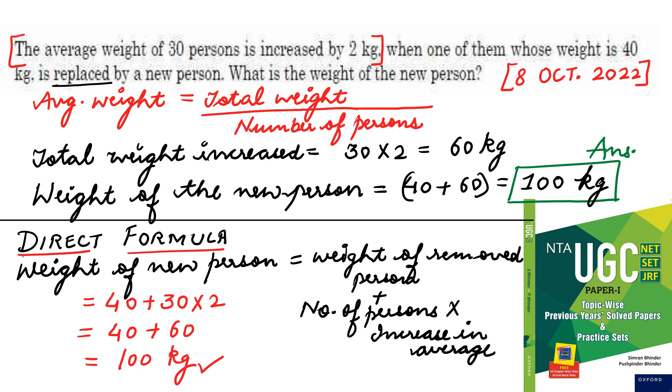Next, try to understand. Weight of the new person, how will it come? Weight of the new person is equal to 40 kg plus 60 kg is equal to 100 kg. 100 kg is your answer. This means the new person who has been added, that person's weight is 100 kg. Because total weight has increased by 60, and he is also replacing the 40 kg person, so the weight of new person is 40 plus 60, that is equal to 100 kg.